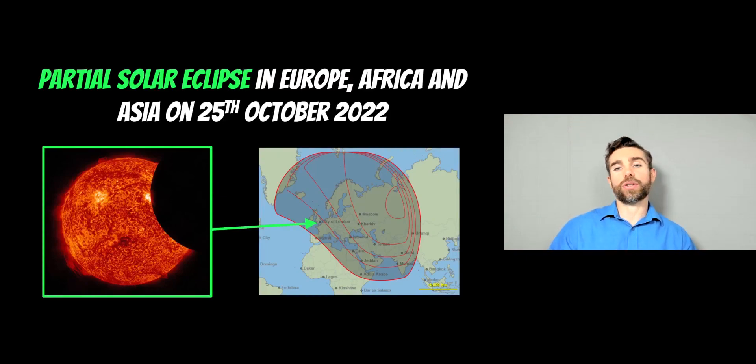On the 25th of October 2022, there's going to be a partial solar eclipse and that's going to be observable in Europe, Africa and Asia.